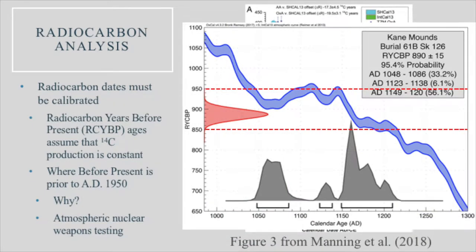Radiocarbon dates must be calibrated, unlike Libby thought originally when he first discovered the technique back in the 1950s. Radiocarbon production in the upper atmosphere isn't constant — it varies as cosmic radiation energies vary, and sometimes solar energies can cause spikes in the radiocarbon curve. This figure from Manning et al. from last year demonstrates differences between a local/regional calibration curve and the typical NCAL-13 for the northern hemisphere and SH-CAL-13 for the southern hemisphere.